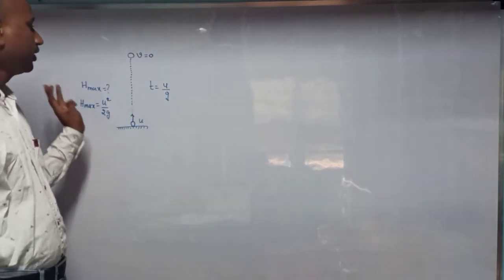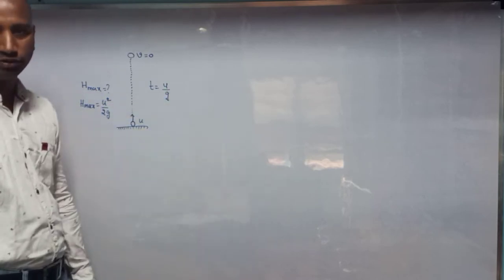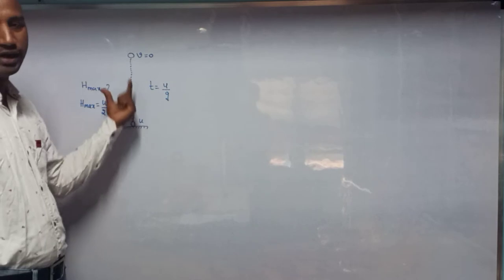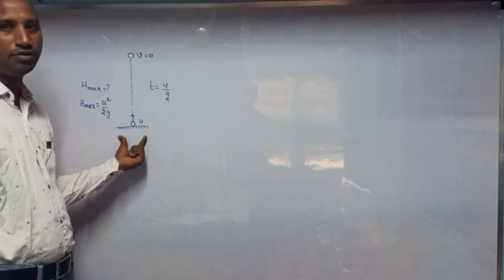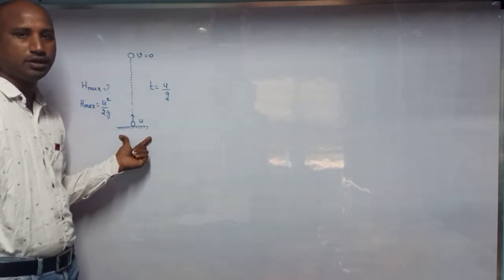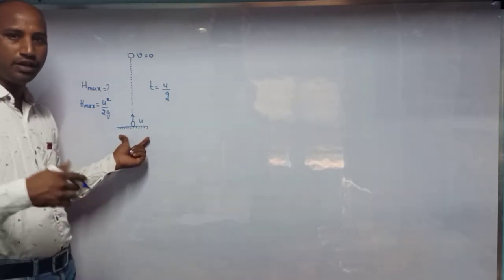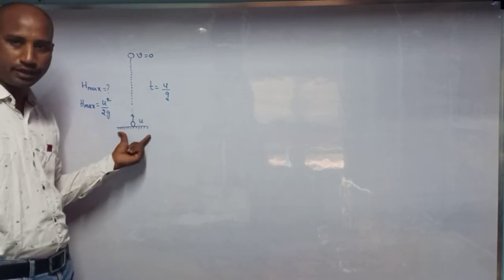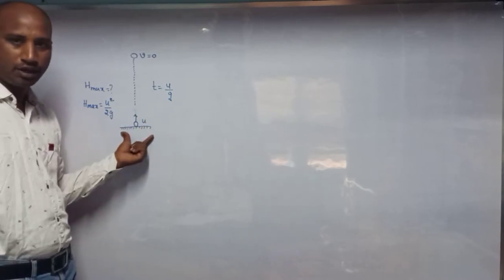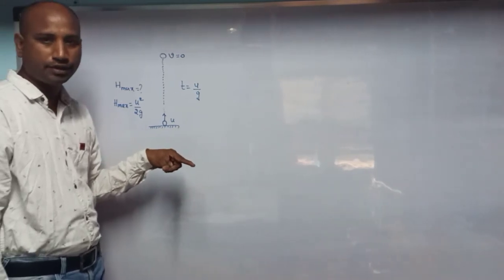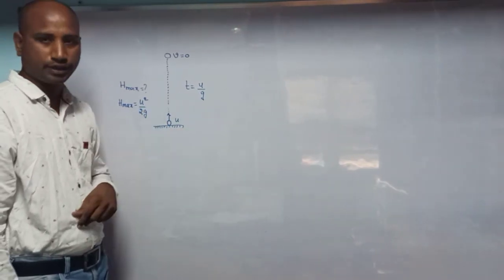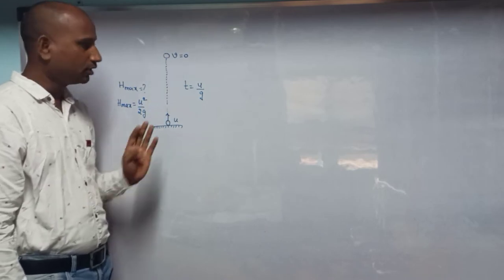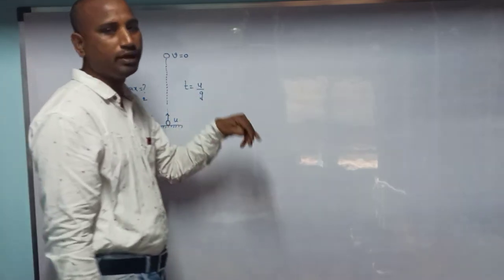These points are related to projectile motion. This projectile is a vertical projectile — a one-dimensional projectile. What is the meaning of projectile? If any body is freely moving under the gravitational field, it is called a projectile. There are two types of projectile: one is vertical projectile, and another one is oblique projectile.